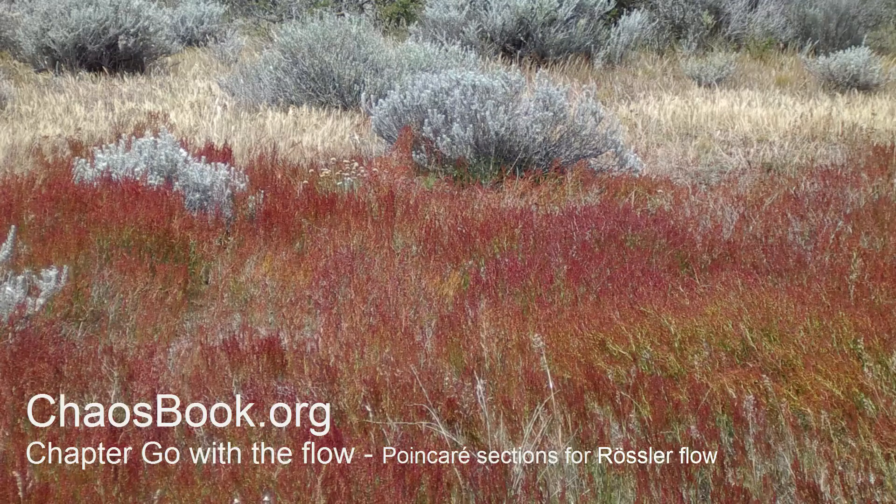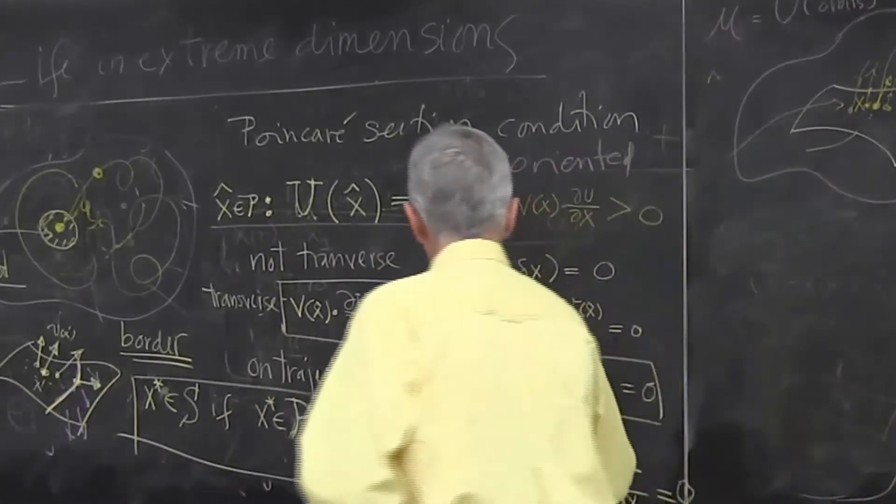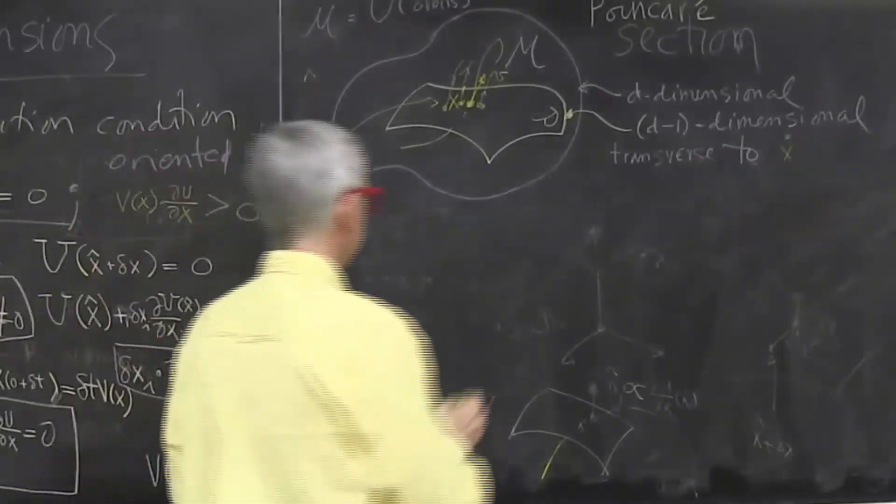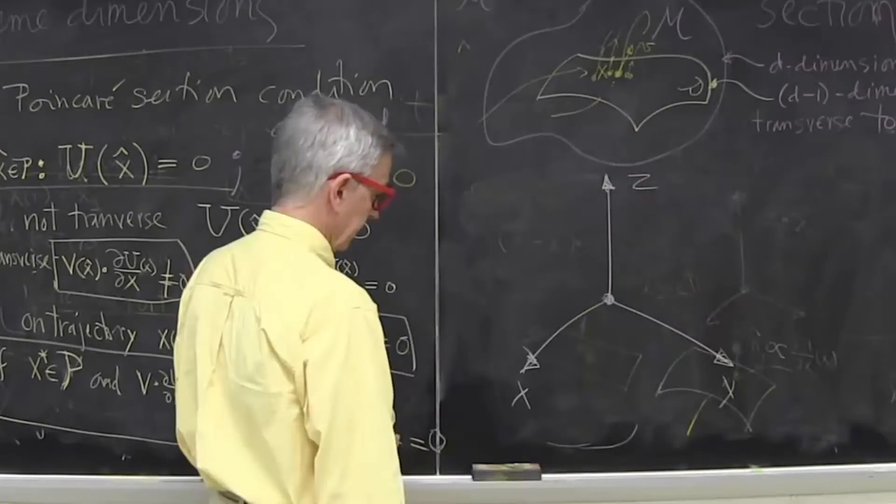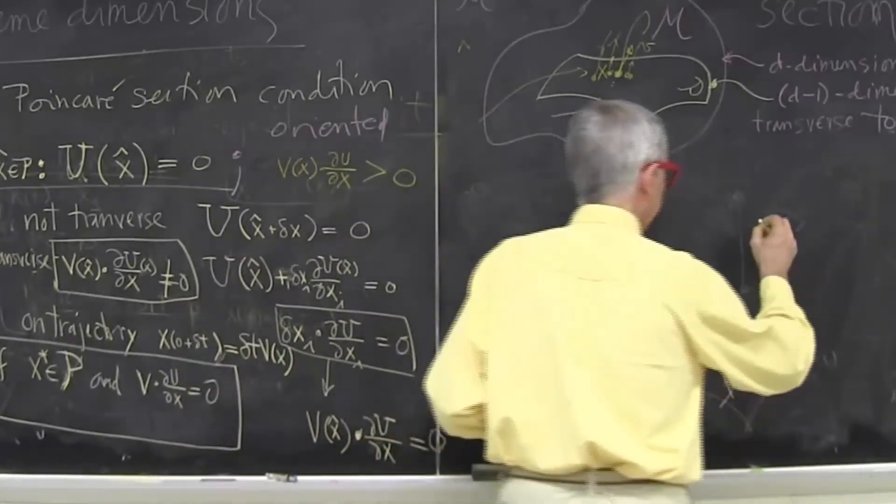The example we have chosen to illustrate is called Rössler. It's a model which has three coordinates. There are three equations.